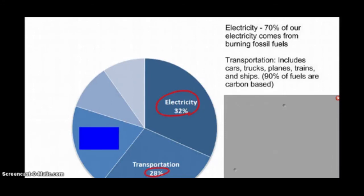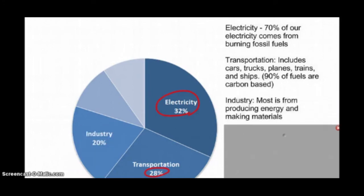Number three on this list is industry. So most of the industry waste comes from either producing energy or making different materials. Lots of energy goes into making the stuff we have and everything else.